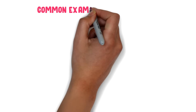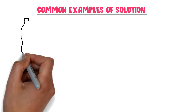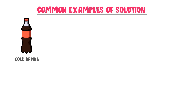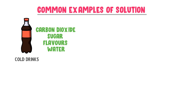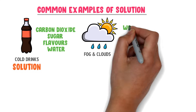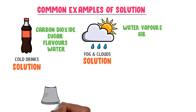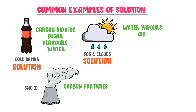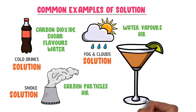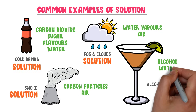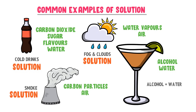Now let me give you some common examples of a solution. The first example is cold drinks, where carbon dioxide gas, sugar, and flavors are dissolved in water to form a homogeneous mixture — a solution. Secondly, fog or clouds, where water vapors dissolve in the air to form a solution. Thirdly, smoke and air, where carbon particles dissolve in air to form a solution. Fourthly, alcohol plus water, where alcohol is dissolved in water to form a solution.